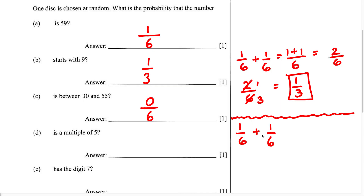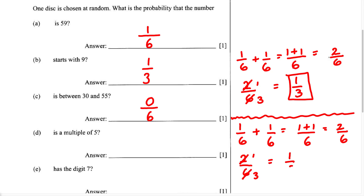Now let's solve for part D. Since we're adding fractions with the same denominator, we write 1 plus 1 in the numerator and keep 6 as the denominator. 1 plus 1 gives us 2 over 6. But this fraction is not in its lowest terms — both 2 and 6 are even numbers, so we divide both by 2. 2 goes into 2 once and into 6 three times. Therefore, our answer is 1 over 3.